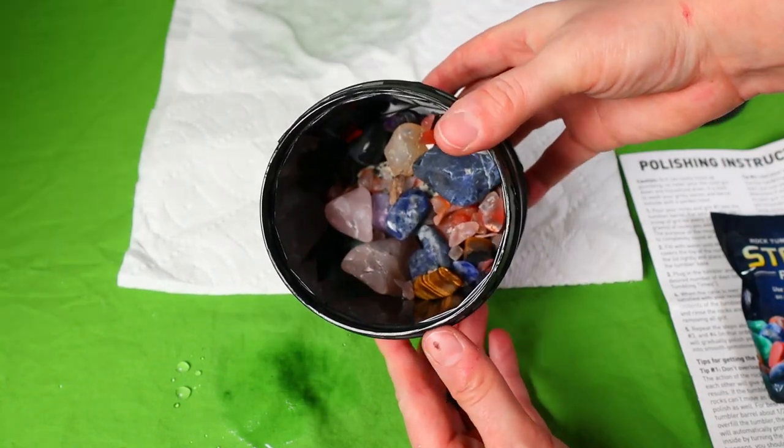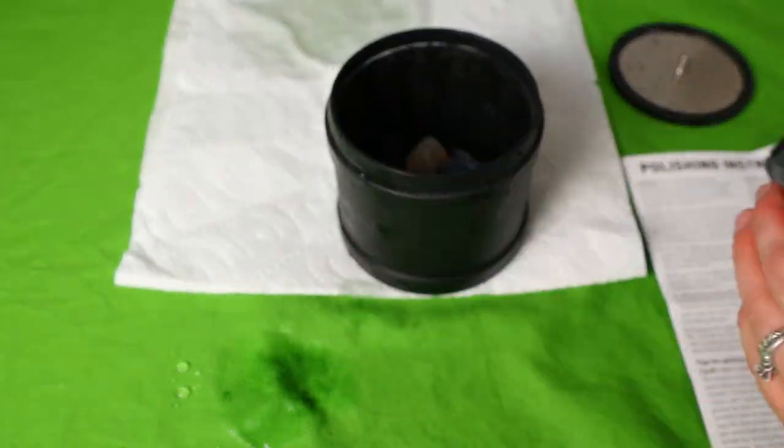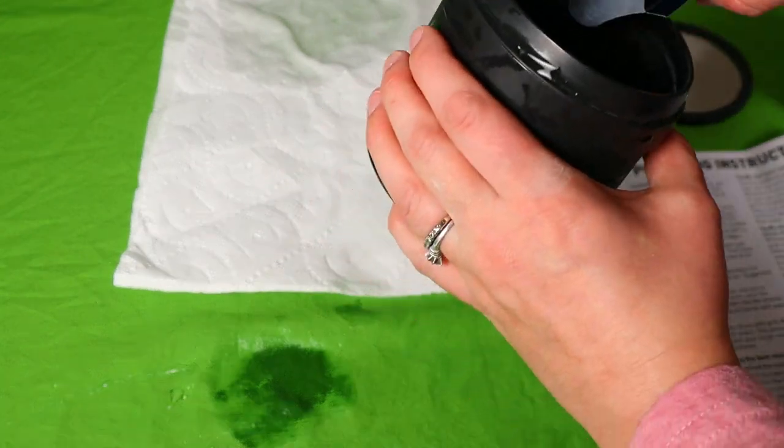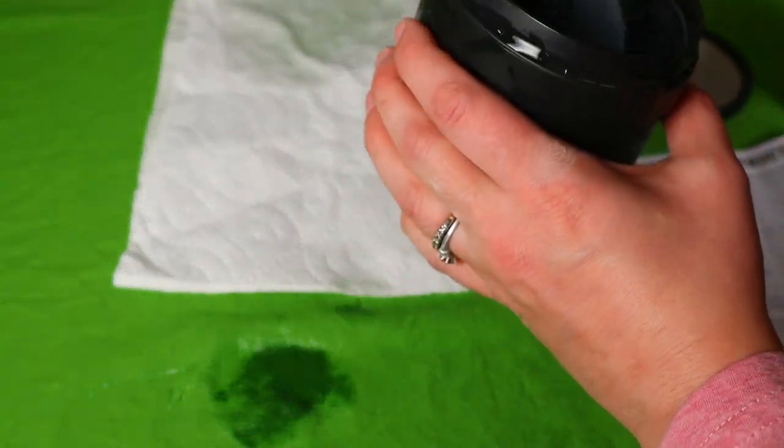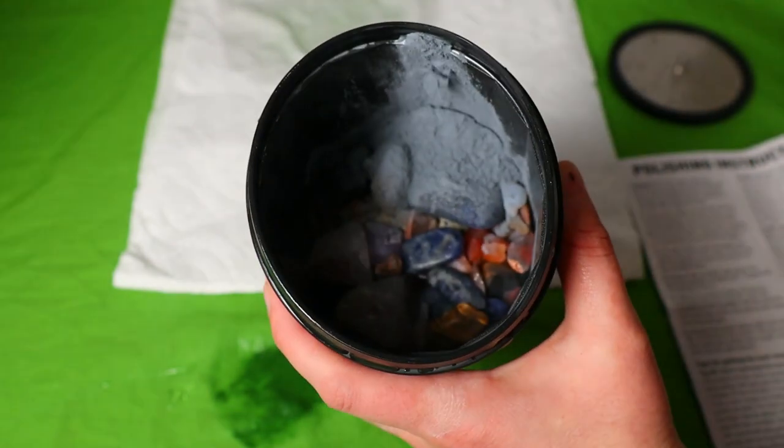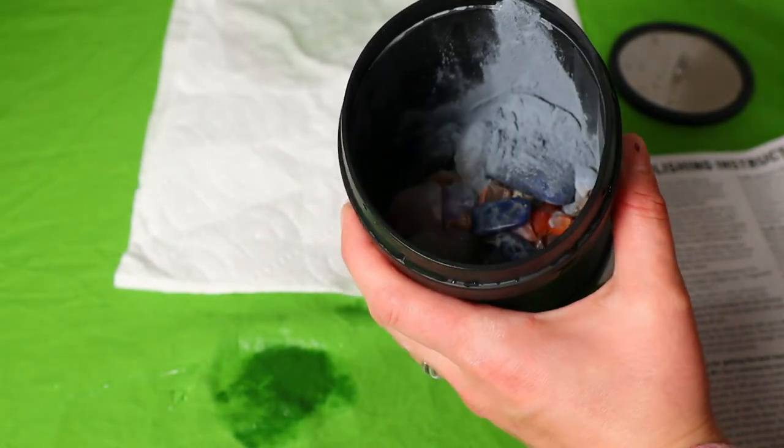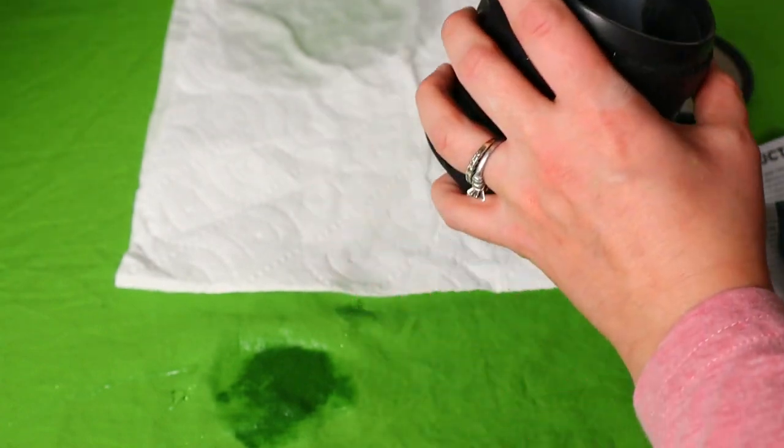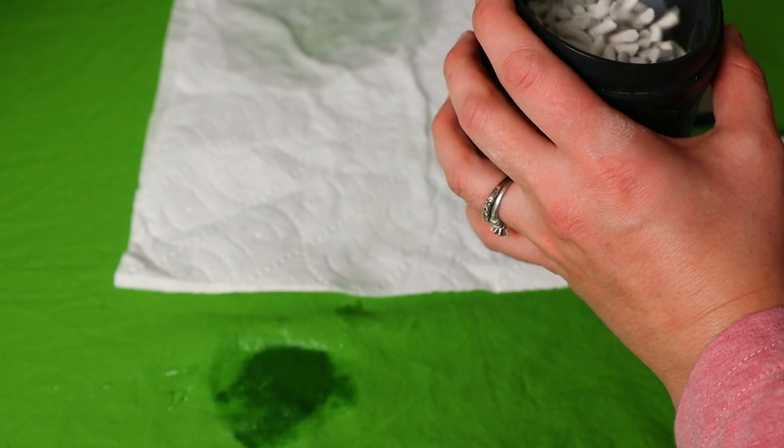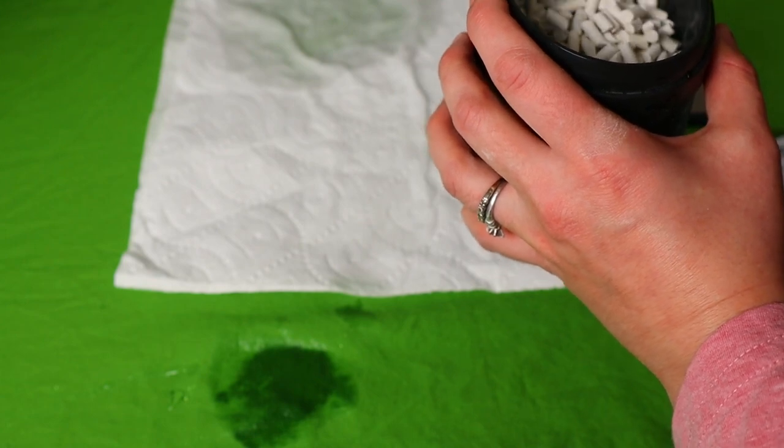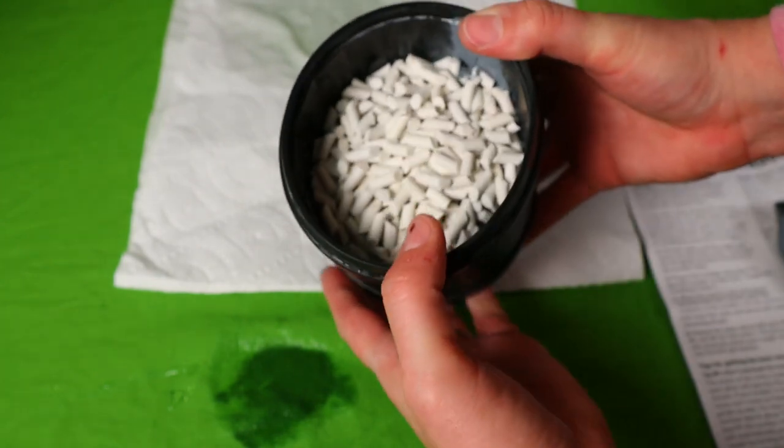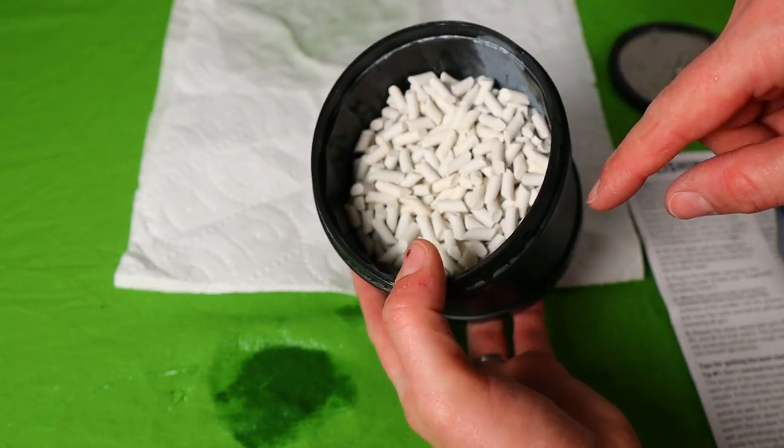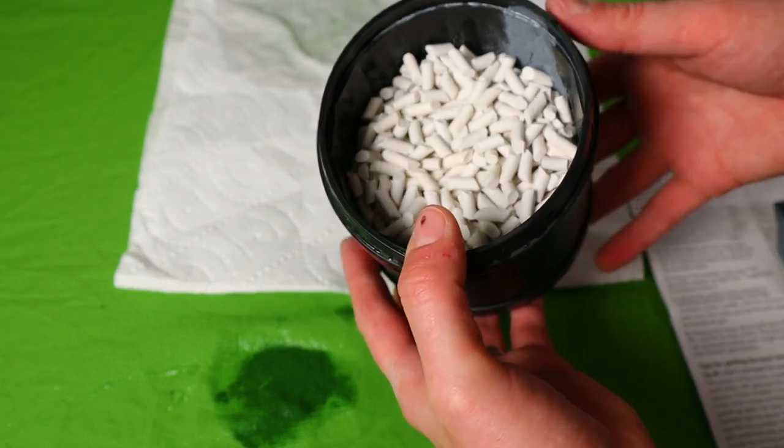So after you put all your rocks inside the barrel, you have to put your grit. We're going to pour our grit in there. So now we have the powder. Then we have to put our plastic pellets in there. And we're going to fill it up about three fourths of the way so that it tumbles good. Those are our plastic pellets. And now I've got to put water in here. So I'm going to go fill it with water and we're almost ready to go.